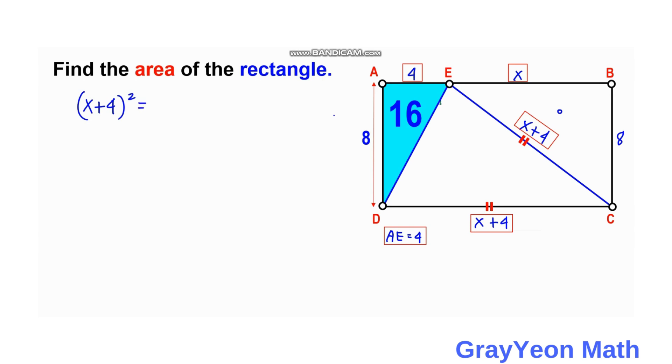equals X squared plus 8 squared. Squaring this binomial on the left-hand side, we have X squared plus 8X plus 16 equals X squared plus 64.